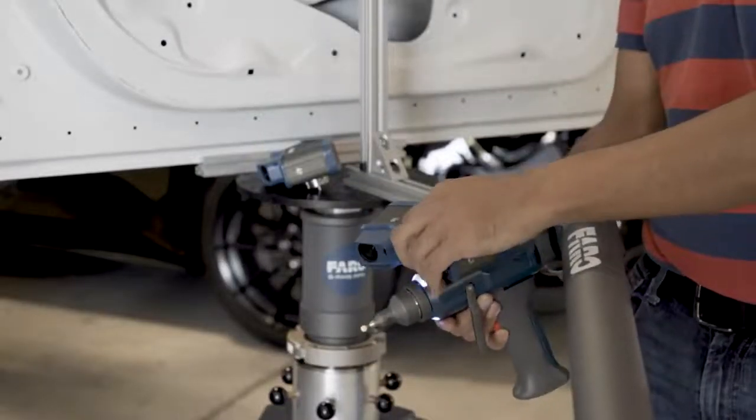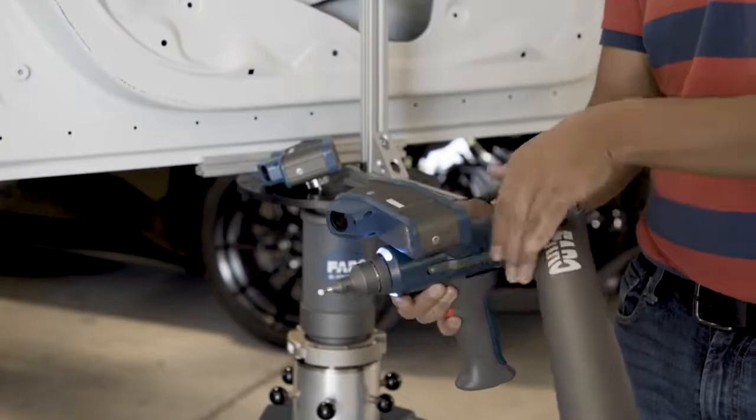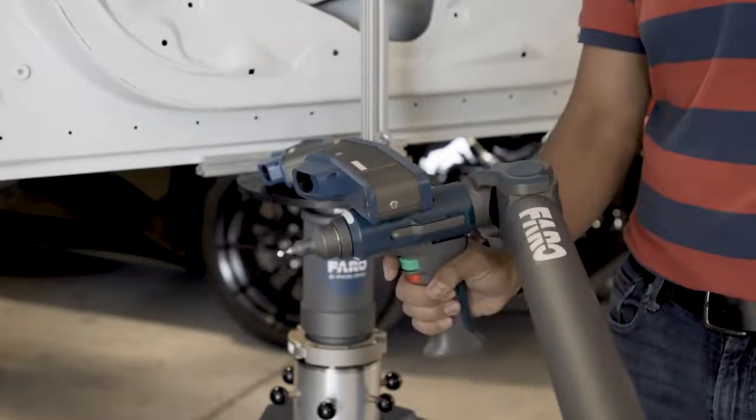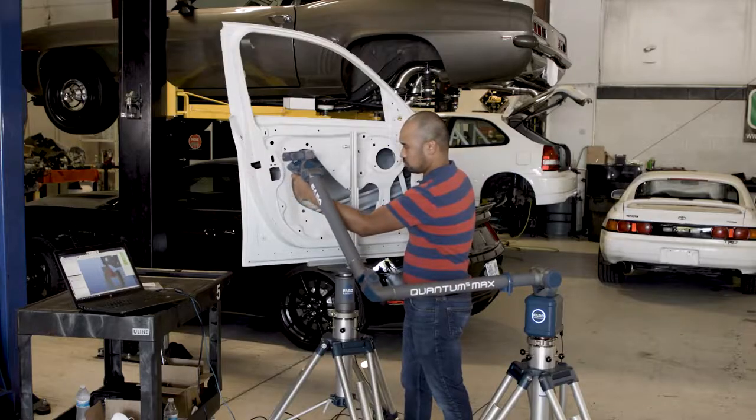If the same part has small details or features with tight tolerances, quickly swap the XS with the high-resolution XR LLP.